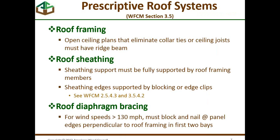So we start at the roof. This slide is a reminder about some limitations in the prescriptive roof system discussion in the manual. In terms of roof framing, open ceiling plans could eliminate collar ties or ceiling joists — if you have that condition, you must have a ridge beam. The roof sheathing has to be fully supported by roof framing members and needs to be supported by blocking or edge clips. When you get wind speeds greater than 130 miles an hour, you must block and nail at panel edges. There are other limitations in Section 3.5 as well.